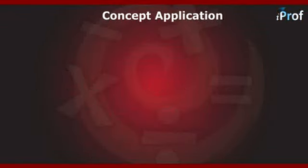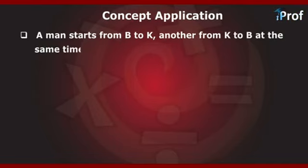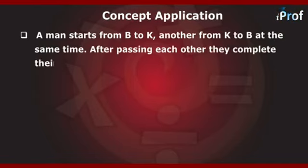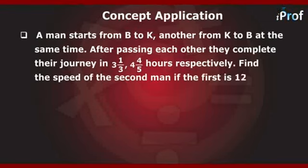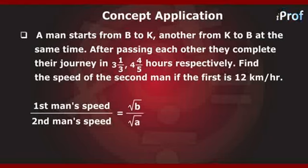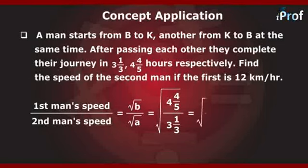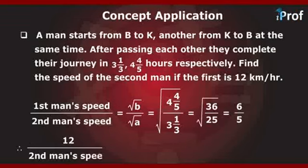Consider this question: A man starts from B to K, another from K to B at the same time. After passing each other, they complete their journeys in 3⅓ and 4⅘ hours respectively. Find the speed of the second man if the speed of the first is 12 km/h. Speed of first / speed of second = √(4⅘) / √(3⅓) = √(36/25) = 6/5. Therefore 12 / second man's speed = 6/5, giving the second man's speed as 10 km/h.